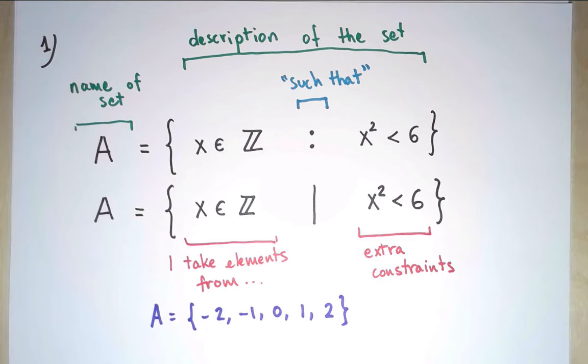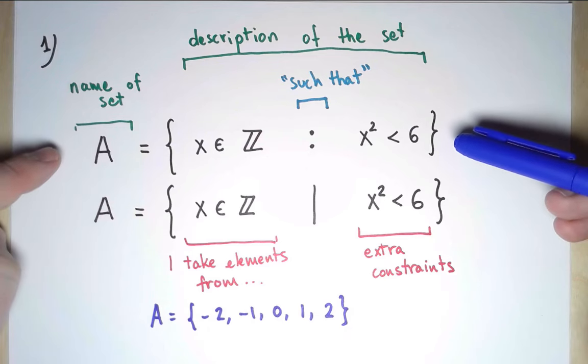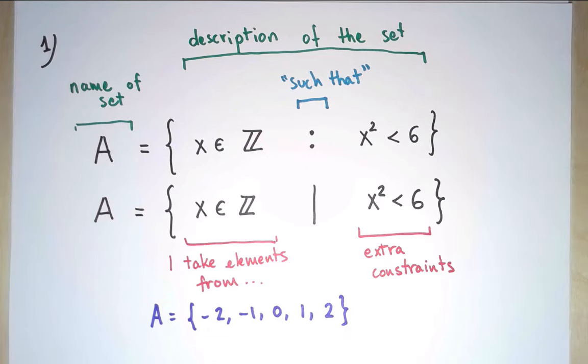There are going to be many examples where we cannot write an explicit list, but we can give a description like this one. And that's when this notation will come in handy.